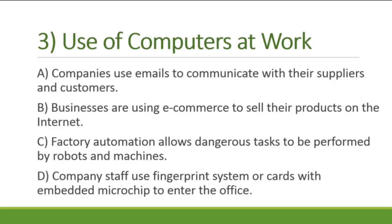As time and resources are precious, some factories have invested a lot of money in the use of robots and machines to automate their processes. This is especially so for car factories, because robots can carry heavy equipment easily compared to a human being who would have suffered under the weight. Finally, the use of a fingerprint system or staff card with embedded microchip has tremendously increased efficiency and the security of workplaces.